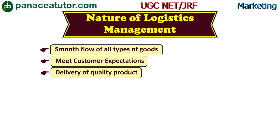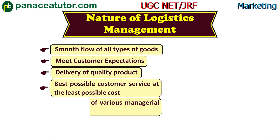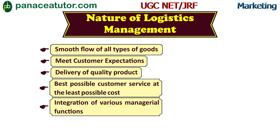The next point is best possible customer service at the least possible cost — you provide the best possible customer service but not at a high cost; you provide those services at a low cost. The next point is integration of various management functions. When we study logistics, we talk about three functions: planning, implementing, and controlling — so three managerial functions can be integrated.